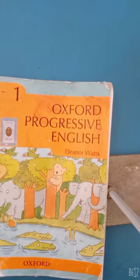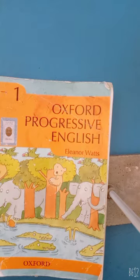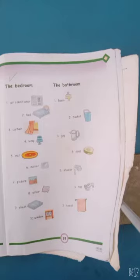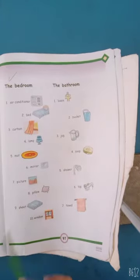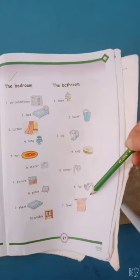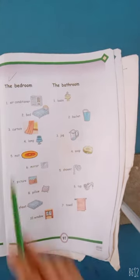Bismillahirrahmanirrahim, Assalamu Alaikum. Welcome back to English class. This is your Oxford Progressive English group. Today we will revise different objects which are found in bedroom or bathroom on book page 97.